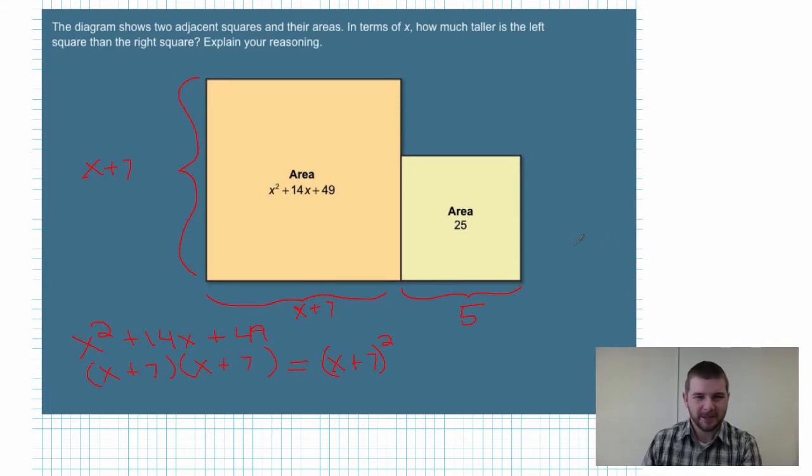All right, so that gets us very near to the solution, but let's reread the question: in terms of x, how much taller is the left square than the right square? Explain your reasoning. Well, if we have x + 7 units representing, let's call it the height of this square, and five of those x + 7 are taken up by this much, matching the side length of the shorter or smaller square, so if that's 5 and this is x + 7, well now we just consider what is x + 7 minus 5. Lining up our constants, we still have an x: x + 2.